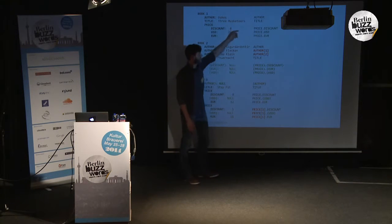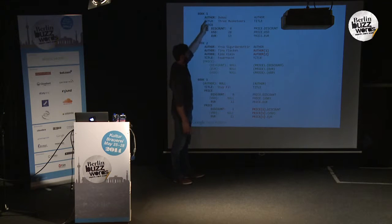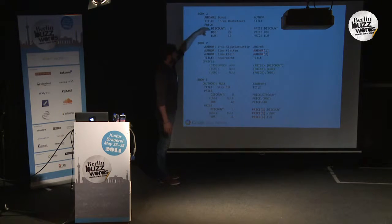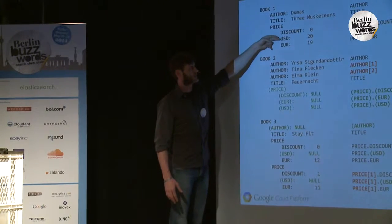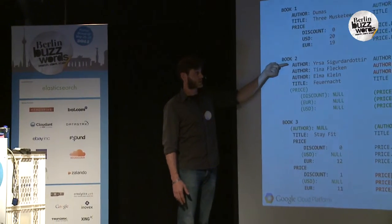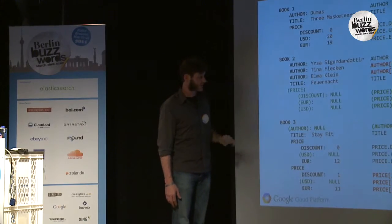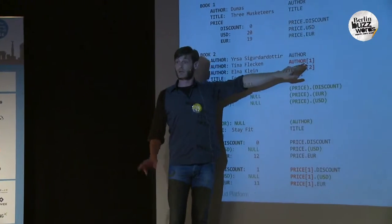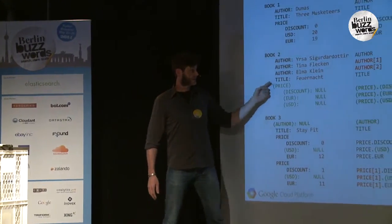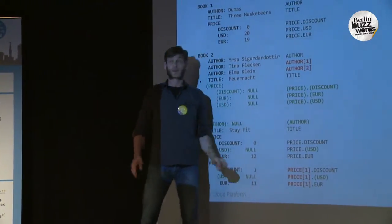In the next step, BigQuery gives names to all elements following a pattern developers will recognize. Author and title are named quite directly. Then we have price.discount, price.usd, price.euro, and so on. In cases where we have more than one element — like with authors or prices — it's like an array representation, simply counting through the elements. Names in parentheses mark elements that don't carry any value.